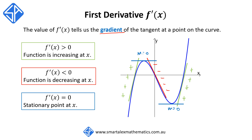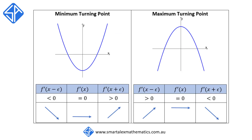So we can use these values of f'(x) to help us determine the slope of the curve and ultimately determine the nature of the stationary points. There are three types of stationary points: minimum, maximum, and horizontal point of inflection.